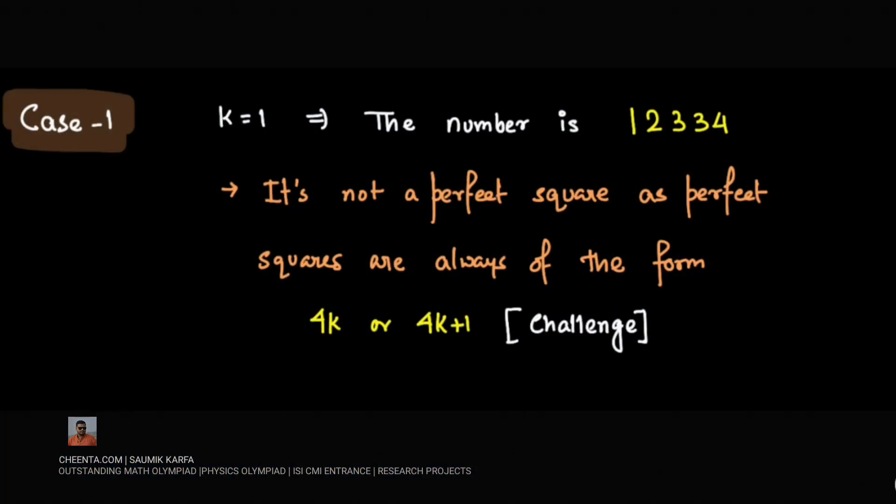So we will analyze all the cases. First case: k equals 1, and the number becomes 12334. Now this is not a perfect square number because any perfect square is always of the form 4k or 4k+1.